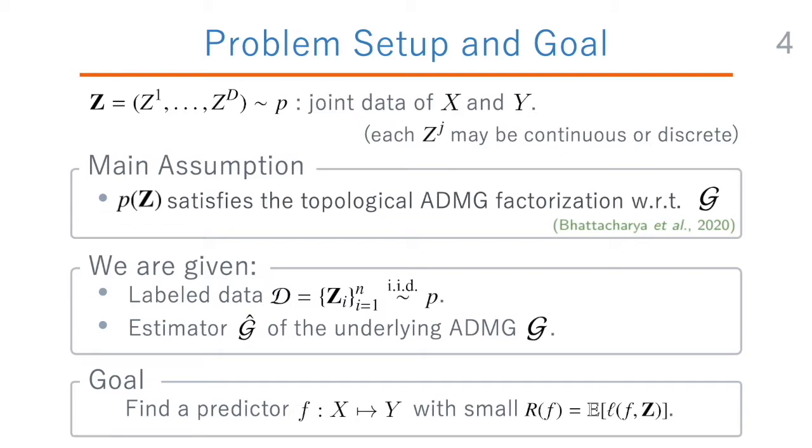Technically, we assume that the joint data distribution p satisfies the topological ADMG factorization with respect to the ground truth ADMG, denoted by the curly g. What we are given in the problem are the joint data of x and y, which is an iid sample from the underlying distribution p, and the g hat, which is an ADMG that is an estimator of the ground truth curly g. Then, the goal here is to find a predictor f for which the expected prediction error is small.